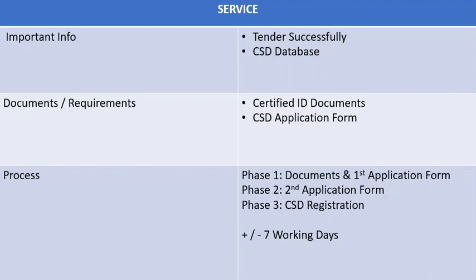The CSD services take place in three phases. Phase one is the process where you provide us with your certified ID and the first page of the initial application form. We will take the information and create your account. You will receive an email with a link to confirm your initial registration. After clicking on the link, you will be sent a one-time pin to your phone to confirm your account.